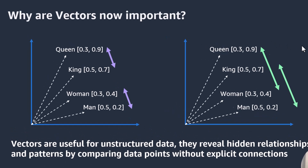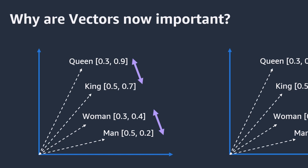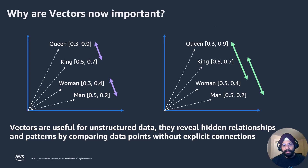Here is a very famous example. I have four vectors on the screen: Queen, King, Woman, and Man. These vectors have two dimensions. Dimension 1 is gender-related and Dimension 2 is royalty-related. We can see x-coordinate 0.3 for Queen is the same as Woman's x-coordinate 0.3, so they are similar in the gender dimension. Similarly, King equals Man in the gender dimension at 0.5. However, looking at the y-coordinate, Queen and King are similar at 0.9 and 0.7 — these two numbers are closer. And Woman and Man are together at 0.4 and 0.2. So machines will understand that Queen and Woman are similar on the gender dimension and Queen and King are similar on the royalty dimension. That is how unstructured data makes sense and patterns emerge.